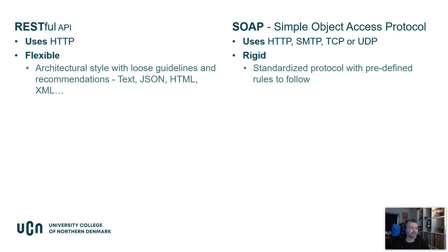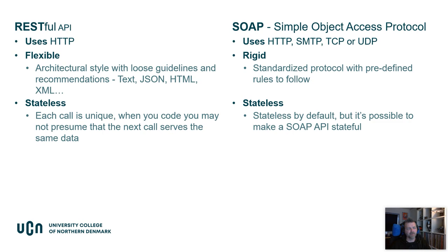A RESTful API is usually flexible — its architectural style has loose guidelines and recommendations. The feedback is usually text, JSON, HTML, or XML. Whereas the SOAP protocol is rigid, with a standardized protocol with predefined rules to follow. Both RESTful API and SOAP are stateless — each call is unique. When you code, you can't presume that the next call will serve the same data, so you should always assume the response is a new dataset. You can't build on what you got the last time you asked.